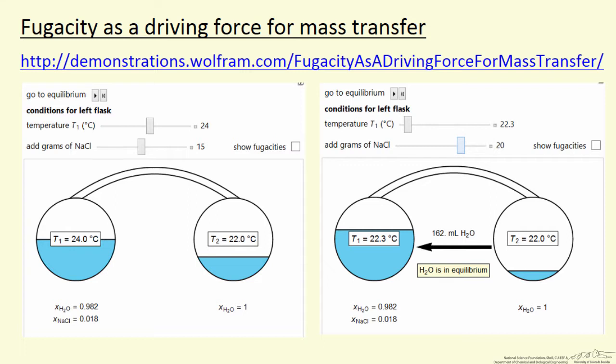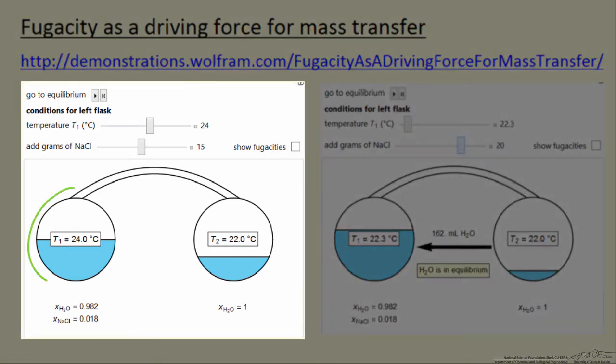I'm going to briefly describe how to use an interactive simulation in which we have two flasks, each containing water. This flask on the left also contains salt, and the mole fraction of salt is indicated, and so the number of grams of salt can be changed with the slider, and likewise the temperature on the left side can be changed.